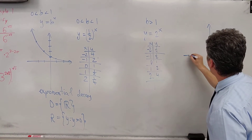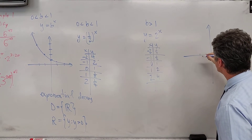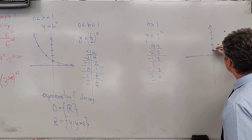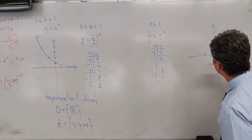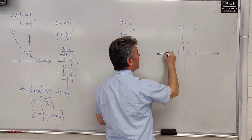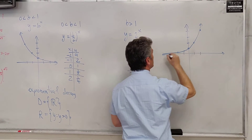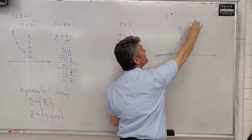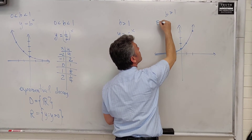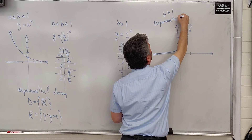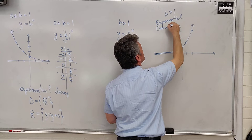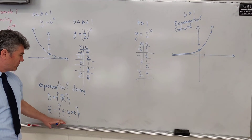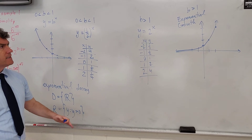So we talked about all of this. Let's go one, two to the right, one, two to the left, and one, two, three, four up. Let's plot: (2, 4), (1, 2), (0, 1), (negative 1, one-half), and (negative 2, one-fourth). Let's draw the graph. When b is greater than one, the graph increases always — it models exponential growth. The domain, just as previously, is all real numbers, and the range is y is greater than zero.